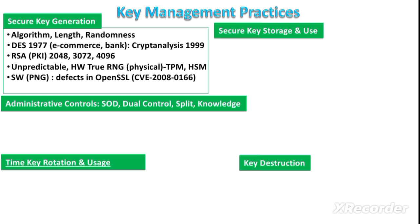There are also software-based pseudorandom number generators, but since they are software-based, they are prone to defects — for example, there was a vulnerability in the OpenSSL package in 2008. Overall, with the increase in computation power and advancements in quantum computing, there should be a relative increase in key length, because these keys can be brute-forced given large computational availability.